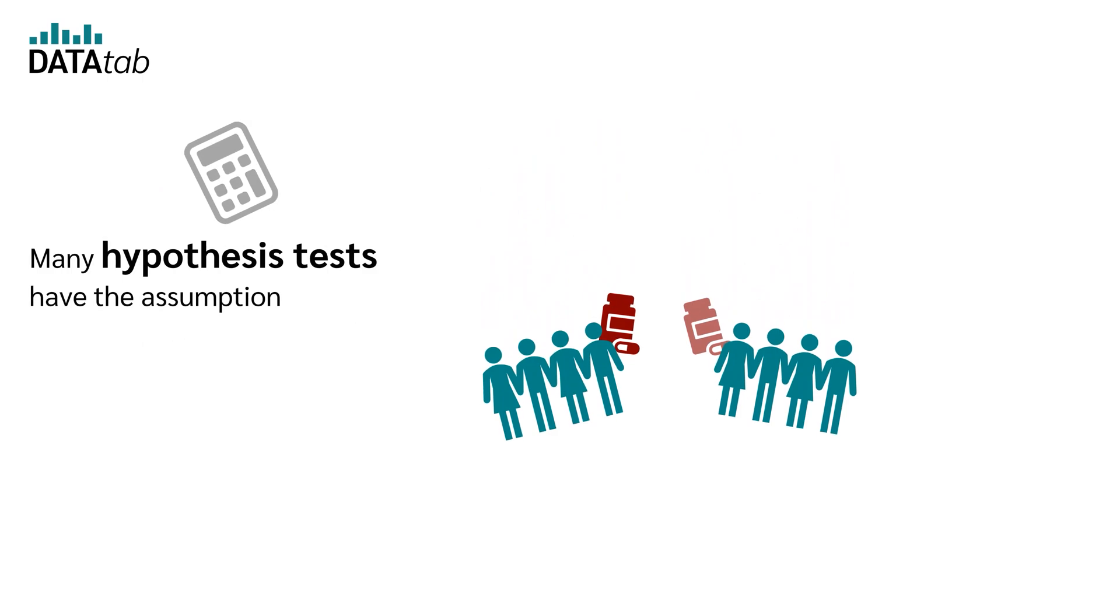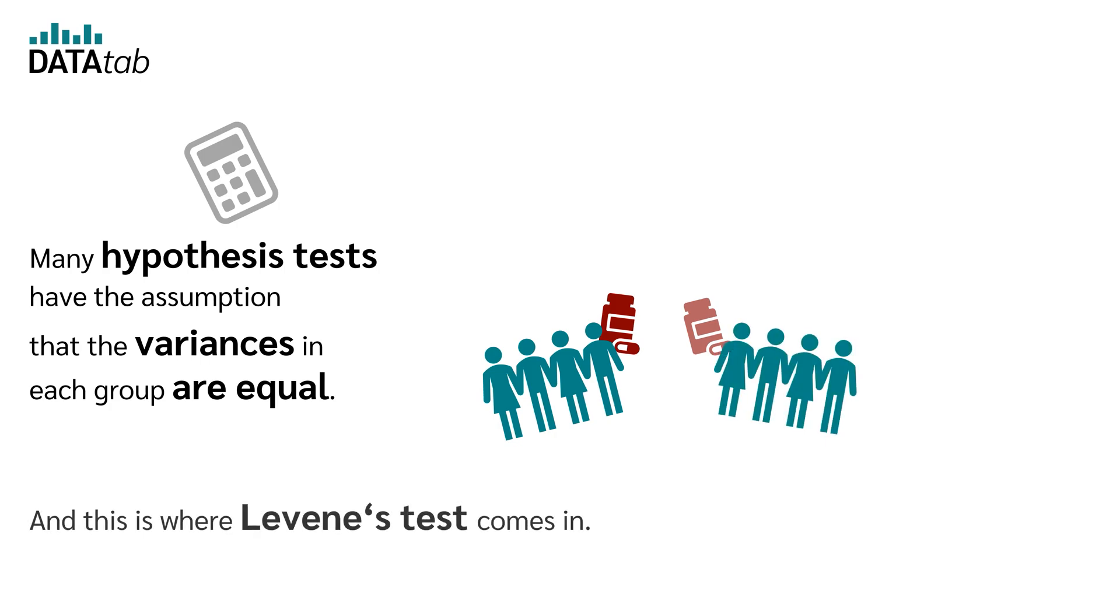Many hypothesis tests have the assumption that the variances in each group are equal. And this is where Levene's test comes in. It tells us whether this assumption is fulfilled or not.